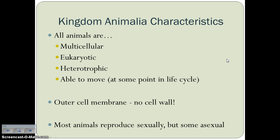Now remember, plants have an outer cell wall as their cell support, but animals do not have that — they do not have a cell wall. The cell membrane is their outer layer. As far as reproduction goes, most animals do reproduce sexually, but some are capable of reproducing asexually.